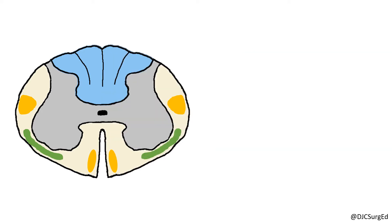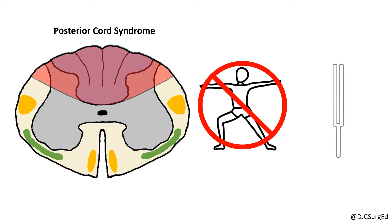Finally, posterior cord syndrome is rare and more likely from a disease process or vitamin deficiency as opposed to trauma. It involves the dorsal columns with resulting loss of proprioception and vibration sense below the level of the injury.